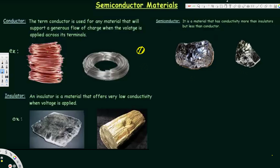Next we have the semiconductor. Semiconductor is in between — the name is already saying that. It's not as high as a conductor and not as low as an insulator. So the current flow is not as high as a conductor and not as low as an insulator. It's in between, that's why we call it a semiconductor.